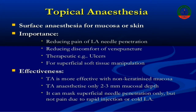Topical anesthesia is another type of conduction anesthesia in which we use a local anesthetic drug applied topically over the surface of the body or body cavity — either over the skin or over the mucous membrane inside the cavity. This is known as topical anesthesia.